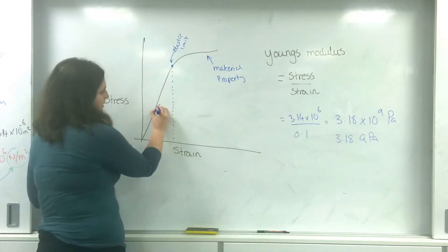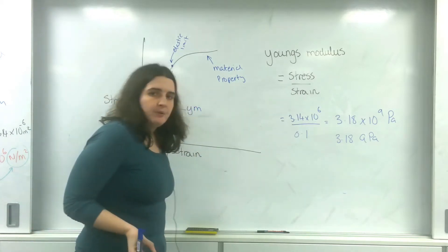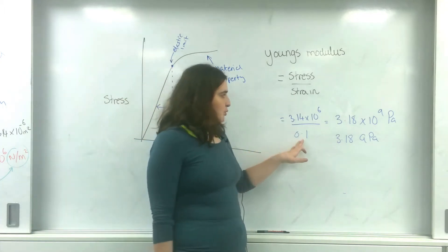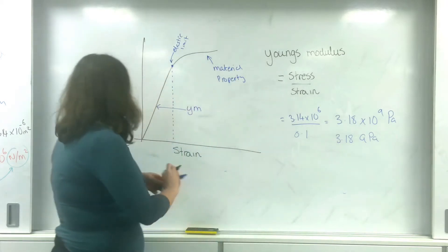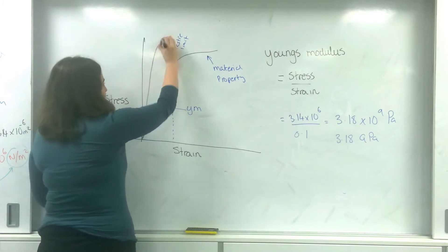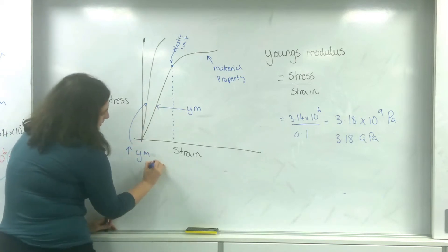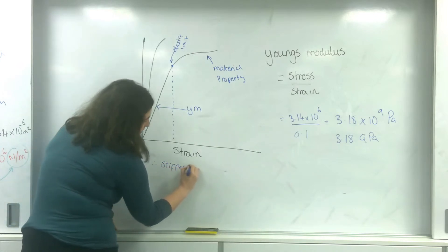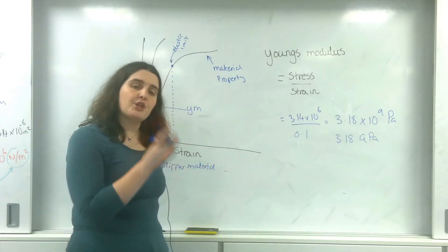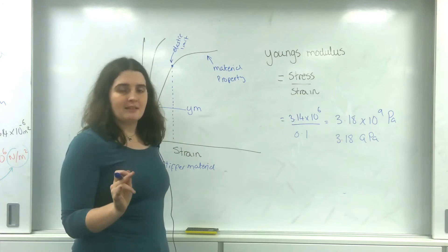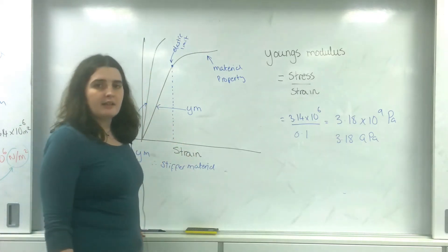So this here is my Young's Modulus. The stiffer the material, the smaller this extension would be. Which means I would have a bigger Young's Modulus. So a graph that looks like that here has a greater Young's Modulus, and therefore is a stiffer material. And notice I'm saying the word material — I'm not saying stiffer spring, I'm saying stiffer material, because these graphs show the material properties of an object. And that there is Young's Modulus.